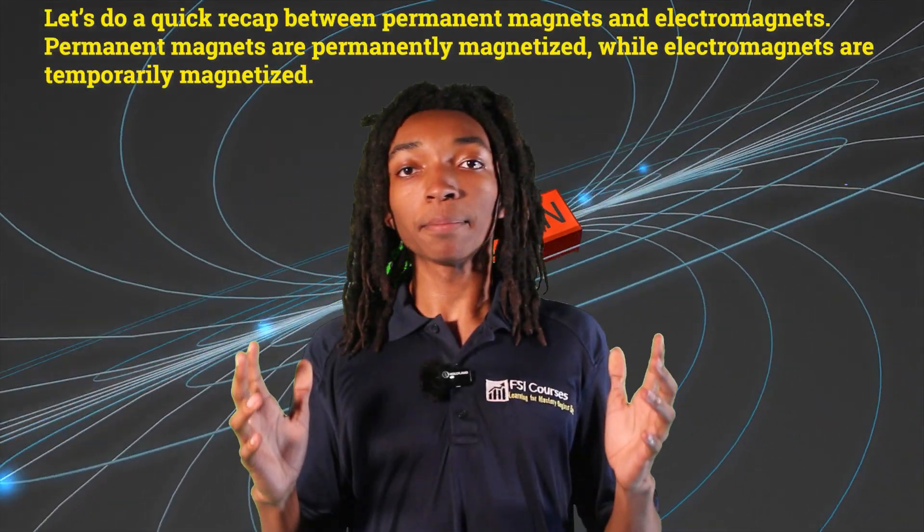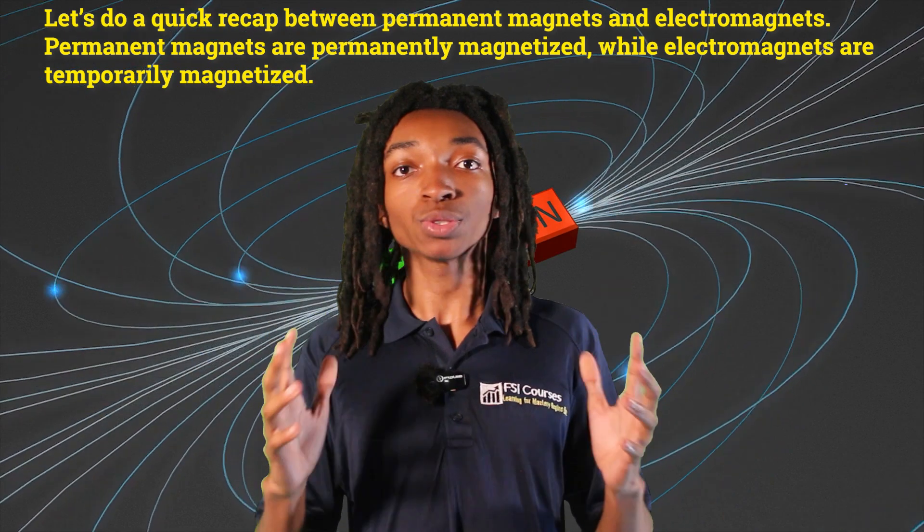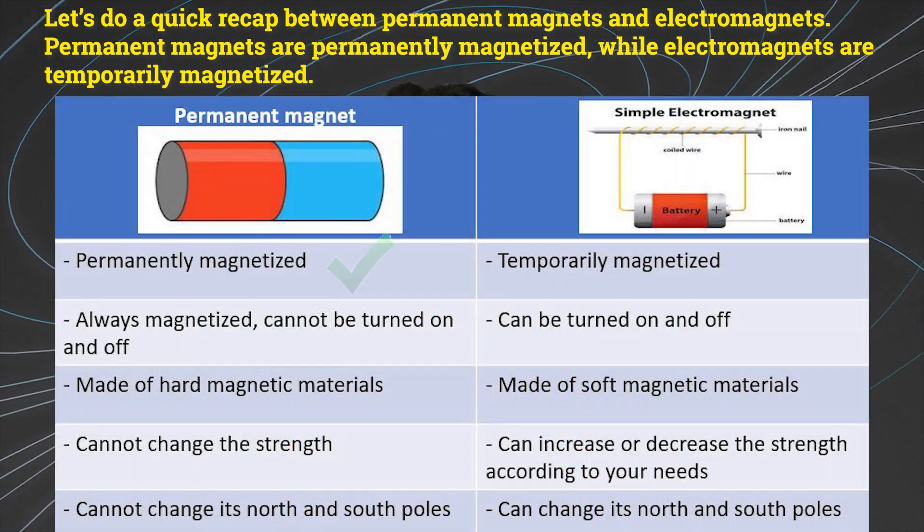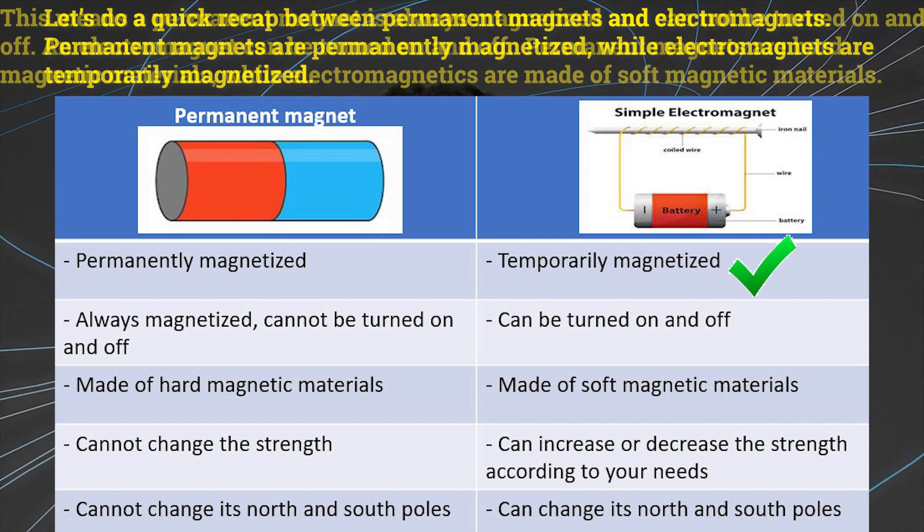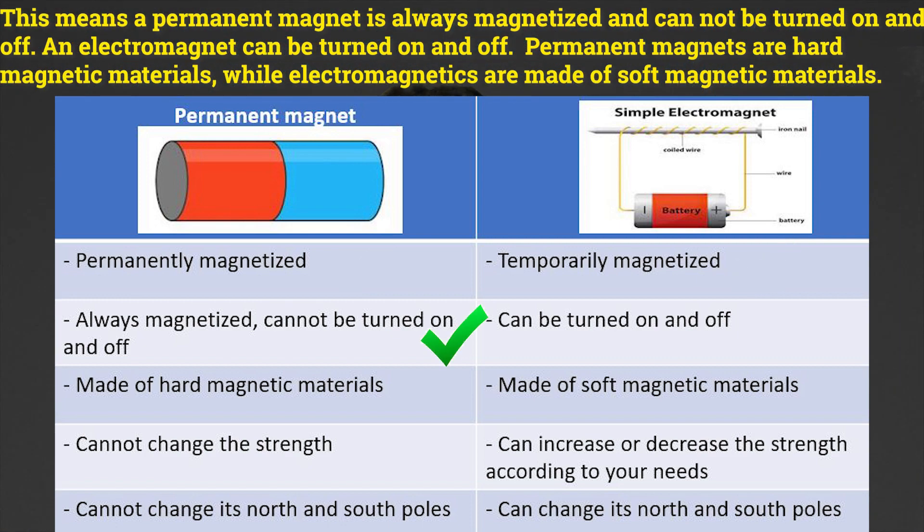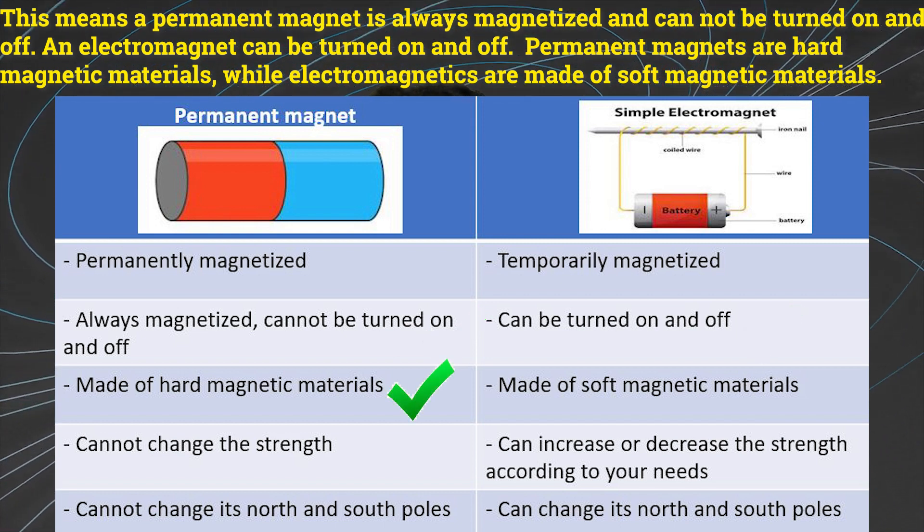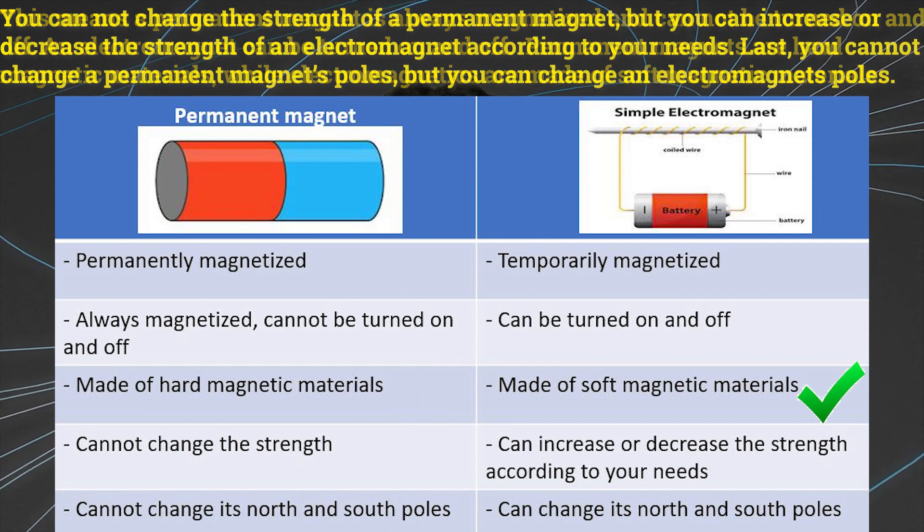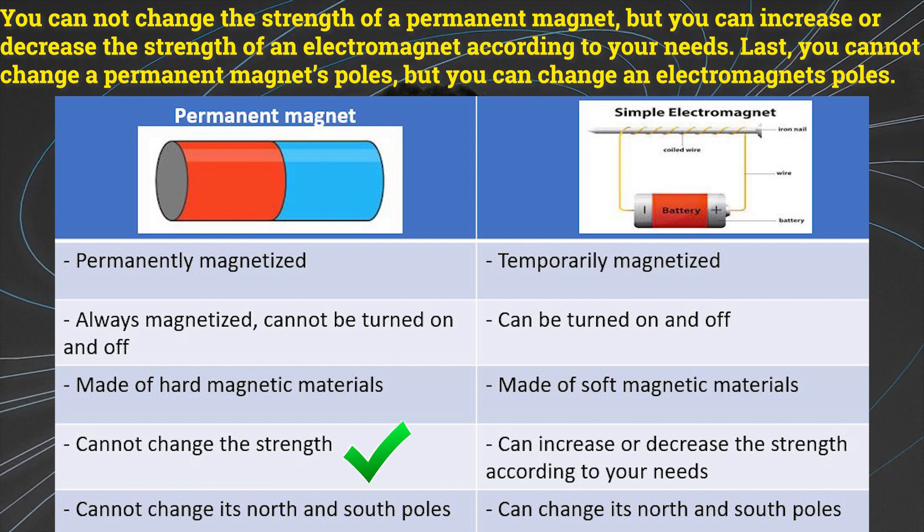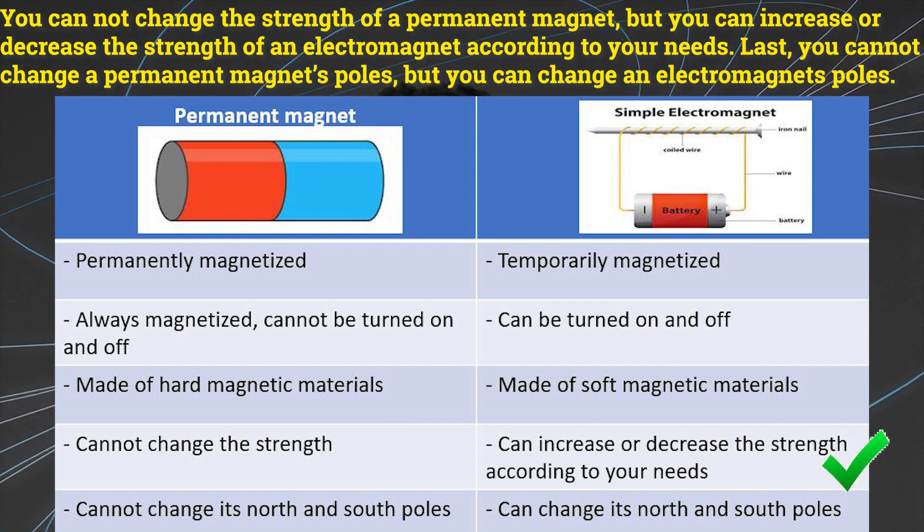Let's do a quick recap between permanent magnets and electromagnets. Permanent magnets are permanently magnetized while electromagnets are temporarily magnetized. This means a permanent magnet is always magnetized and cannot be turned on and off. An electromagnet can be turned on and off. Permanent magnets are magnetic materials while electromagnets are made of soft magnetic materials. You cannot change the strength of a permanent magnet, but you can increase or decrease the strength of an electromagnet according to your needs.